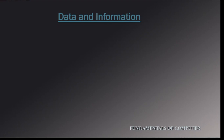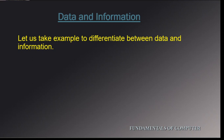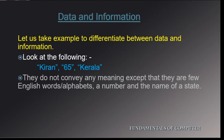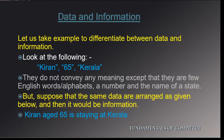We can discuss data and information with the help of a few examples. Look at the following: Kiran, 65, Kerala. If you take the word Kiran, it is nothing but the name of a person; 65 is nothing but a number; and Kerala is nothing but the name of a state. They don't convey a specific meaning. But if you perform some operation on them — adding a few words and arranging Kiran, 65, and Kerala in a specific order — you get complete information: Kiran, aged 65, is staying at Kerala.